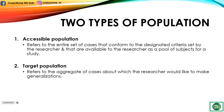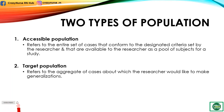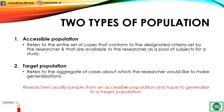Another one is a target population. It is the aggregate of cases about which the researcher would like to make generalizations. A target population for the above study might consist of all deaf-mute children in West Visayas. You want to generalize the result of your study for them. The researchers usually sample from an accessible population and hope to generalize to a target population.